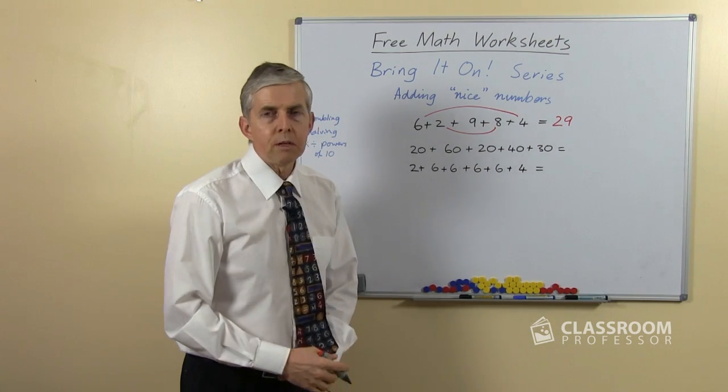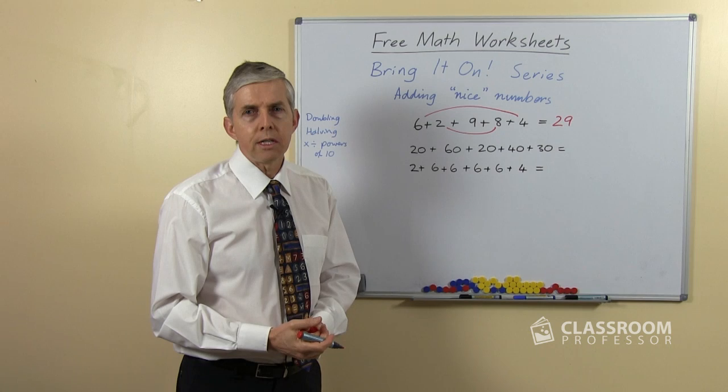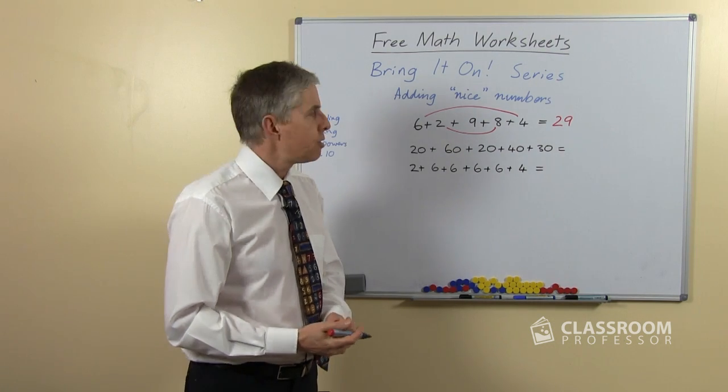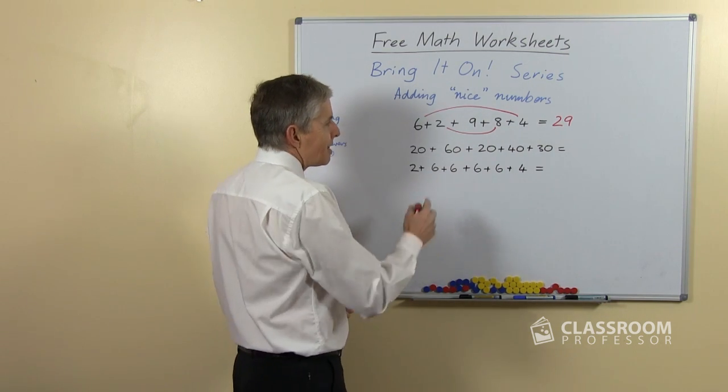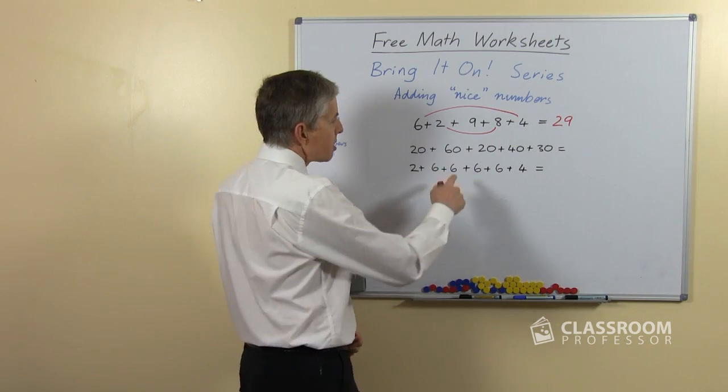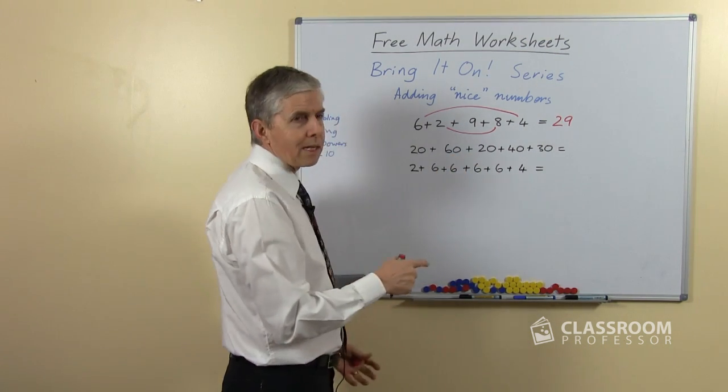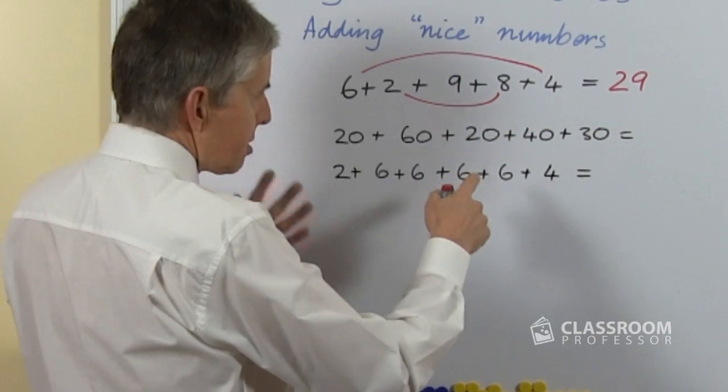Looking at the second example, this time it's in 10's so clearly we're looking to see if we can make 100 and of course we can. There's a couple of choices here. We've got a 60, I would normally start with the biggest number and see what else there is, so obviously I'm looking for 40.